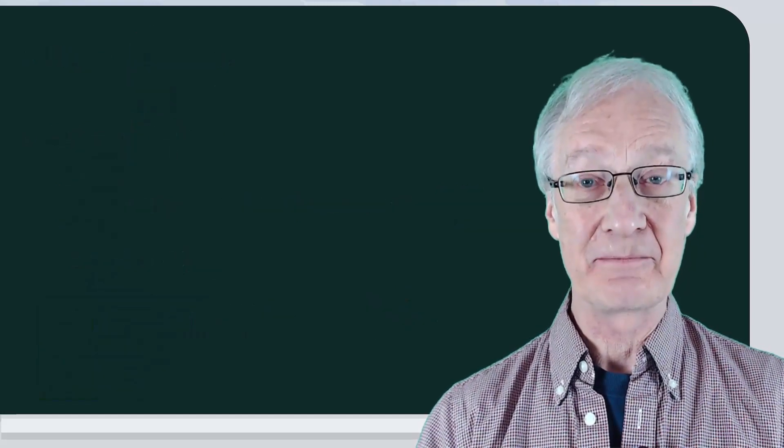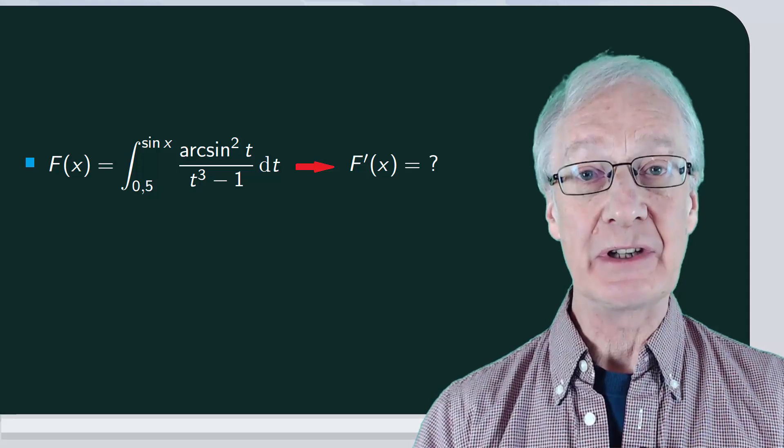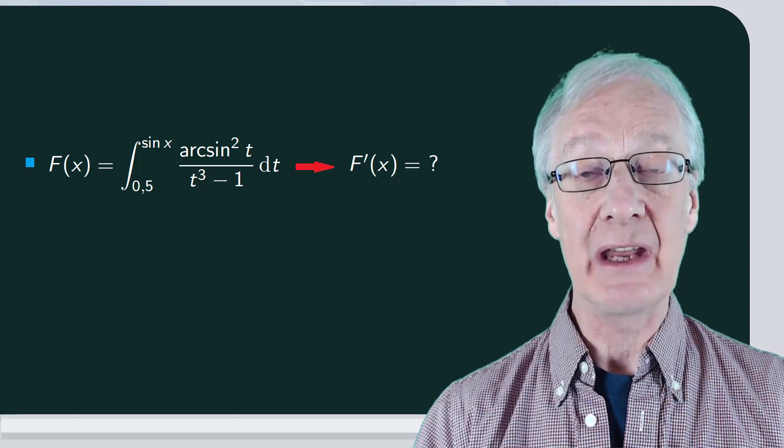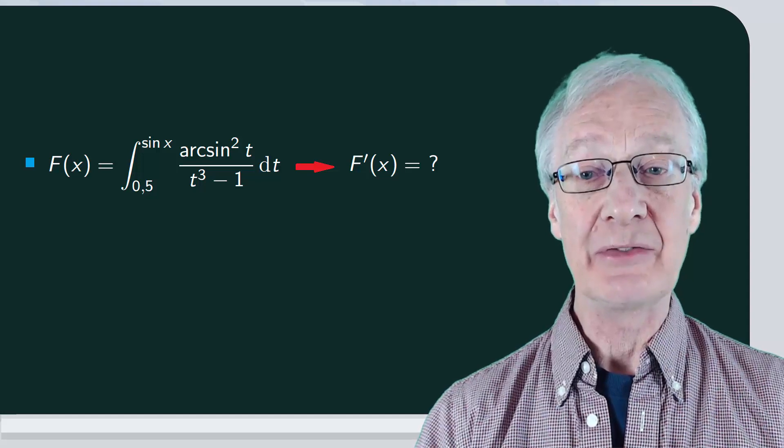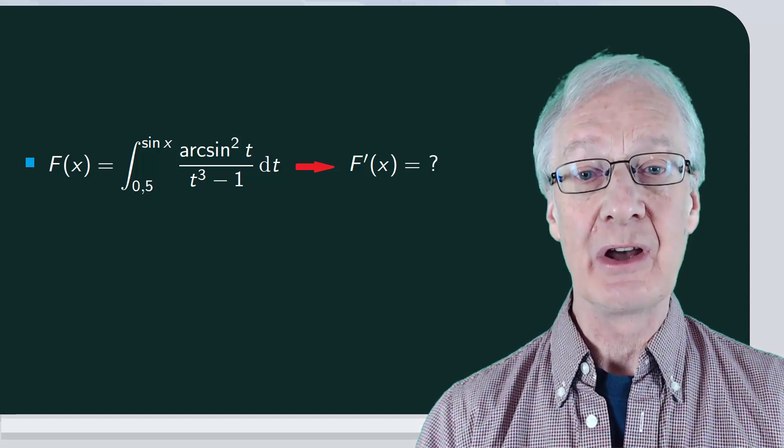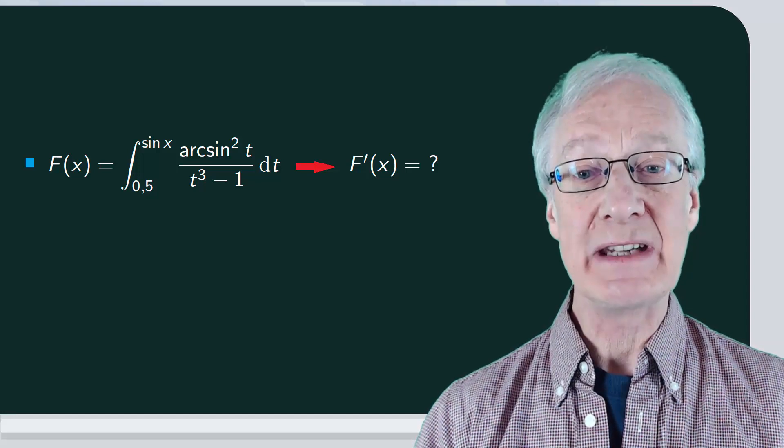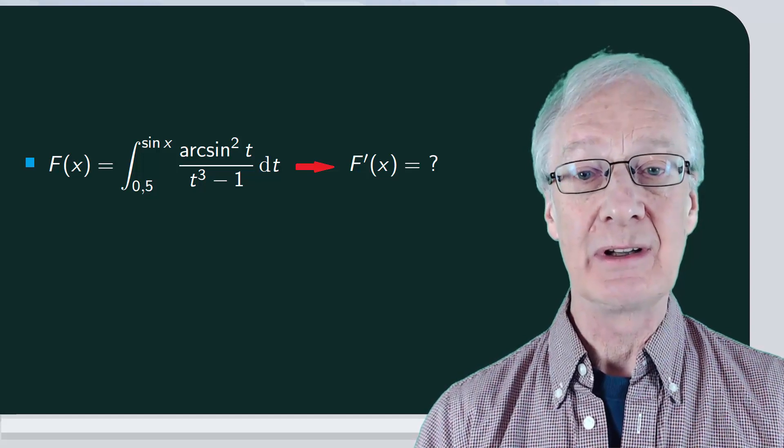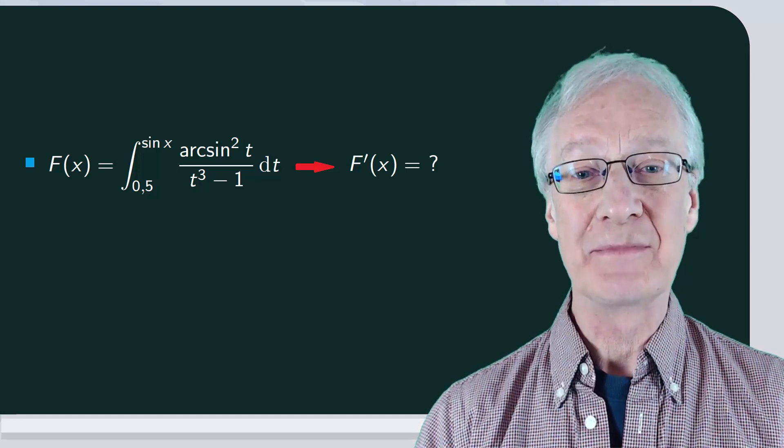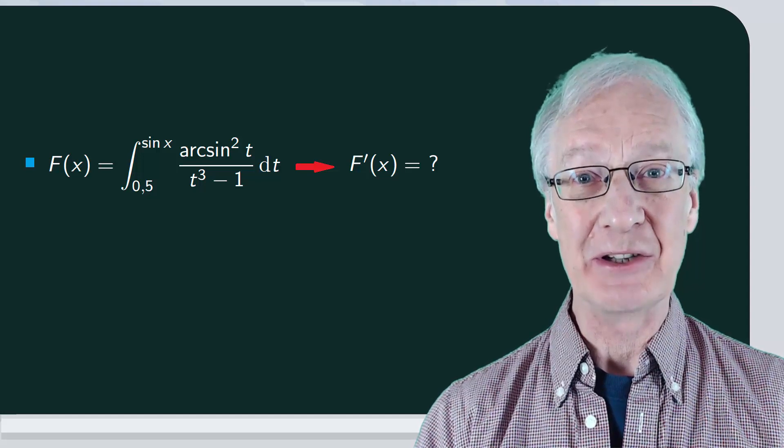To finish, we'll leave you with an exercise. Calculate the derivative of the function f of x equal to the integral between 0.5 and sin x of arc sine squared t over t cubed minus 1. And write your result in the comments below.